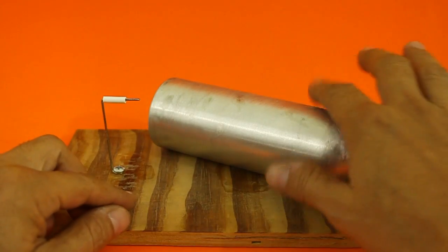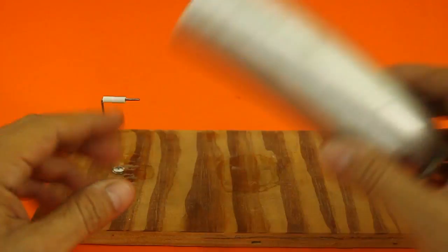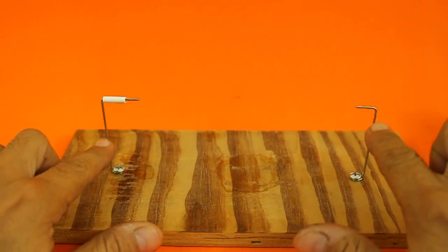Here is the can without paint. I am going to mount it on these two pieces of wire.